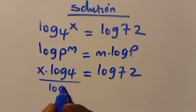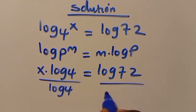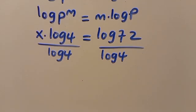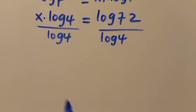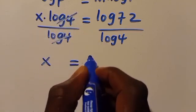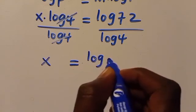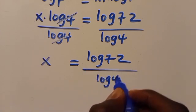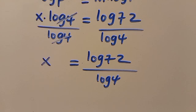Dividing through by log 4, the log 4 terms cancel, and we have x equals log 72 over log 4. Now let us recall that 72 can be expressed as a product.